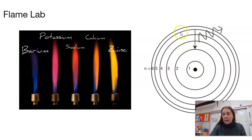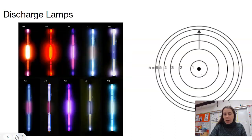The colors of light that we see are going to be a result of the differences in energy between the different energy levels in that particular atom. We're also going to look at this using discharge lamps.